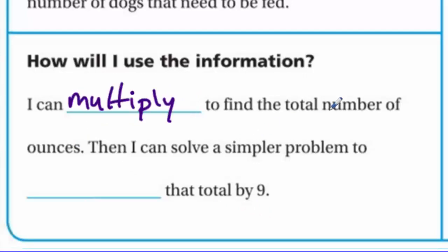How will I use the information? I can multiply to find the total number of ounces, then I can solve a simpler problem to divide that total by nine. So I'll multiply — there are 18 ounces in each can, so I multiply by eight. Then I'll use the 'solve a simpler problem' strategy to divide that total by nine.